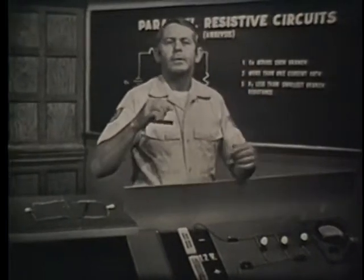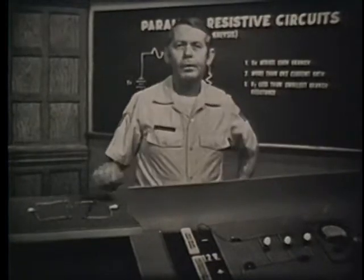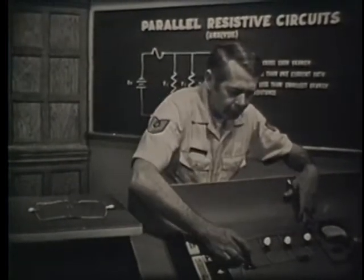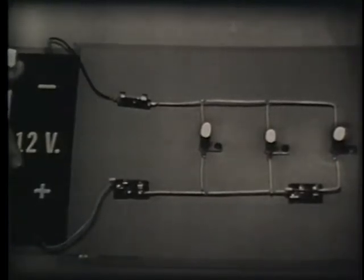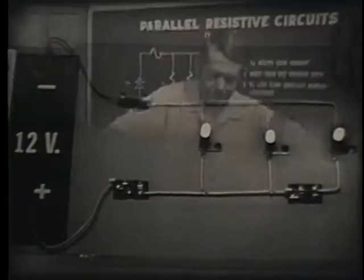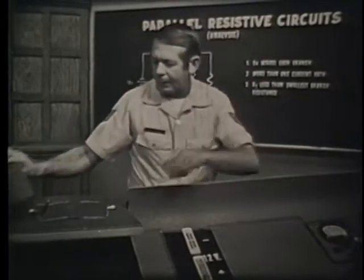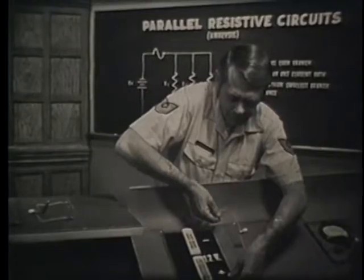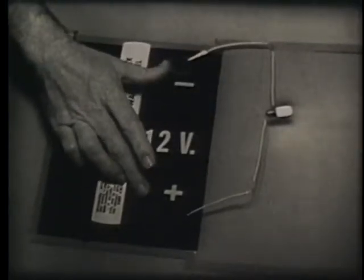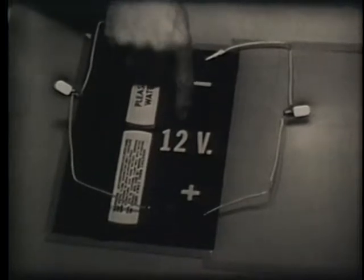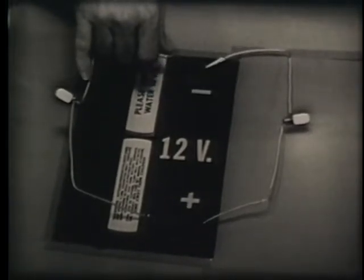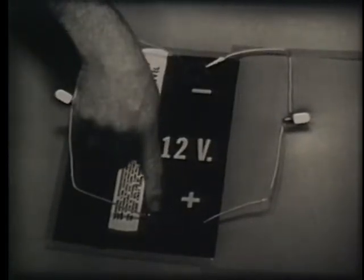So the parallel circuit has more than one path for current. But what about the voltage? Notice on this trainer that each branch is connected directly across the battery. Let's investigate this by building a parallel circuit. I'll start by connecting one bulb across the battery. When the bulb is placed in this manner, it's obvious that the applied voltage is across the bulb. If I place a second bulb over here, it's clear that I still have the applied voltage across each light.